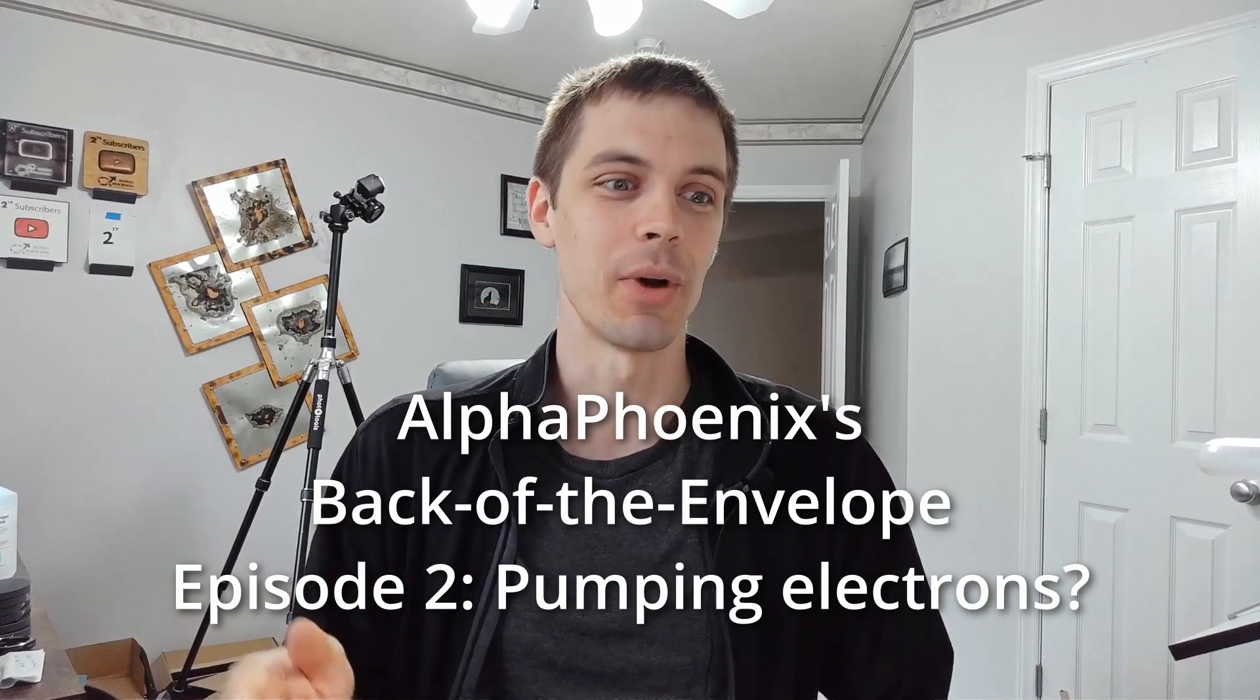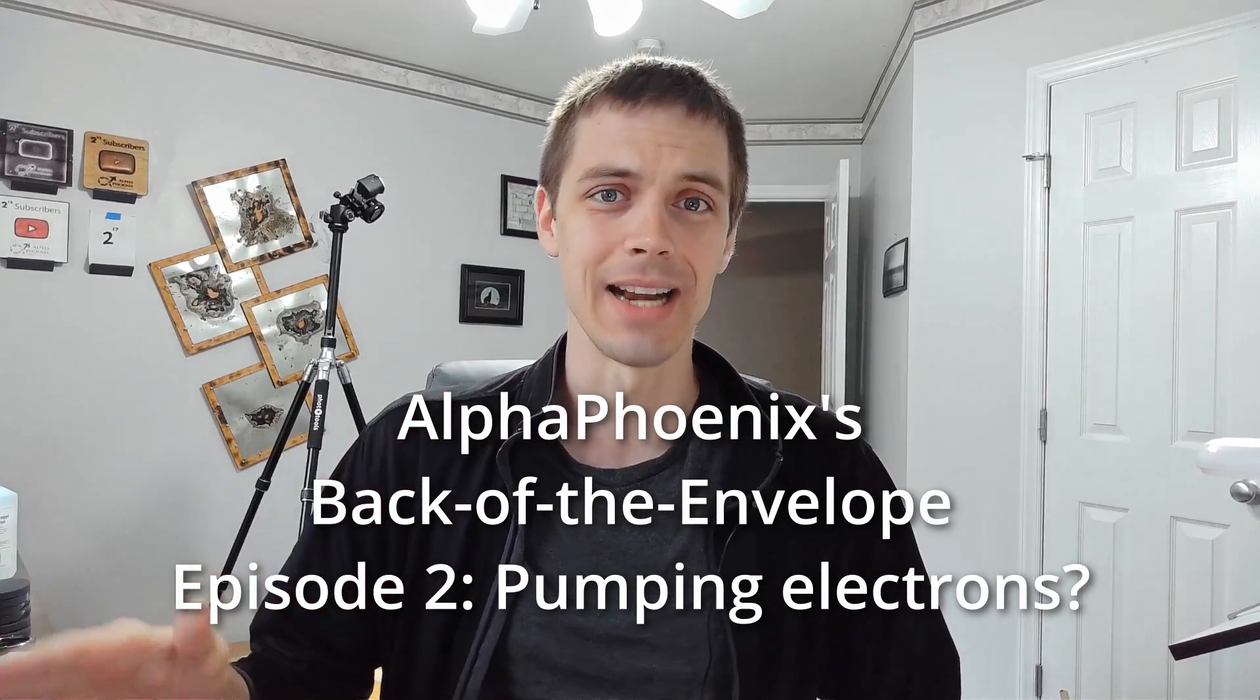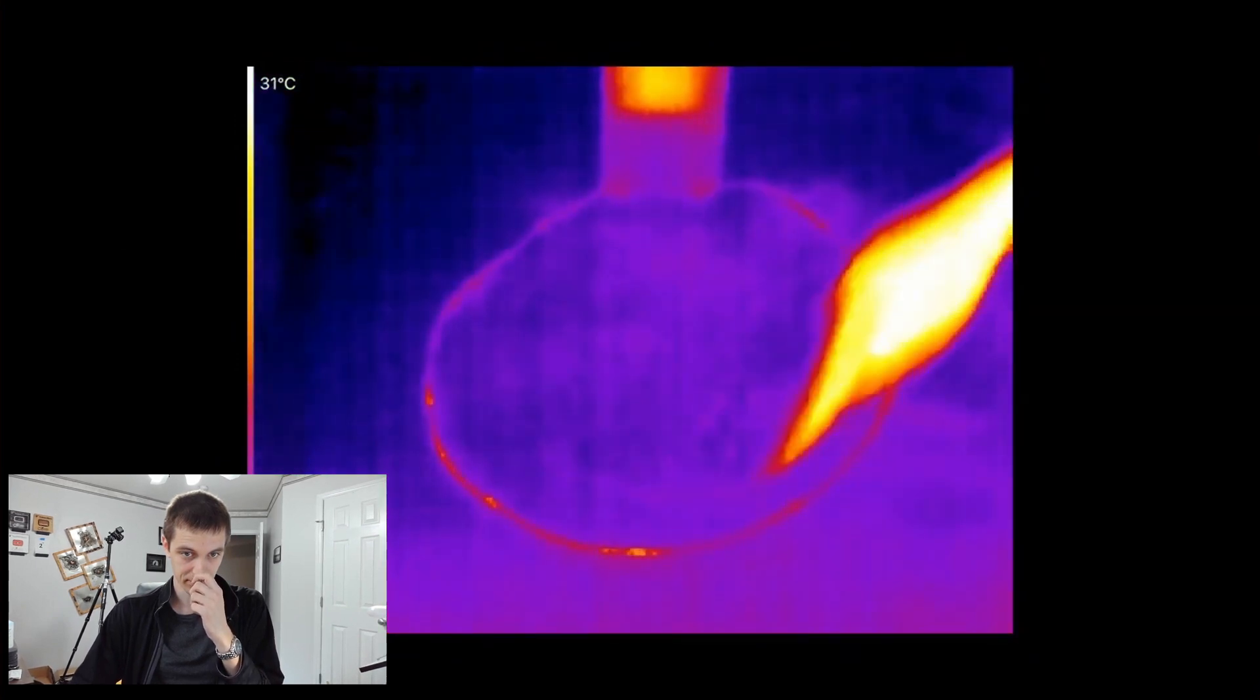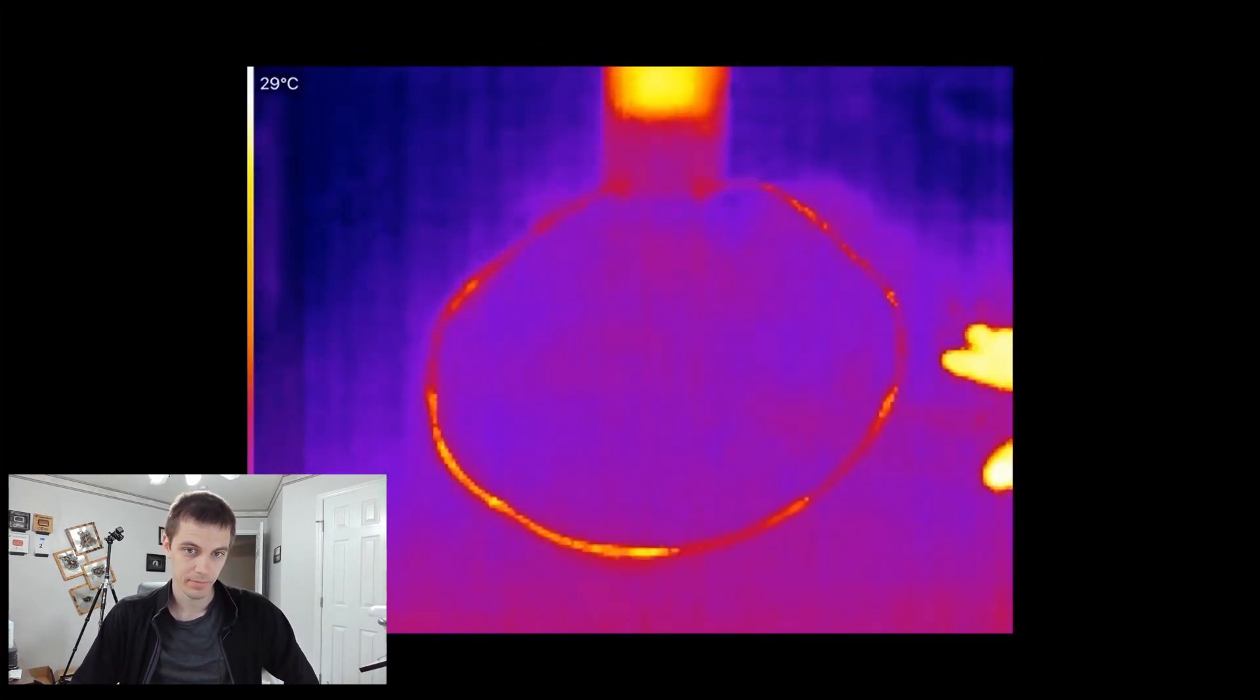Today, I want to talk about a throwaway line in one of my own videos. When talking about electrons flowing in a wire, I said the average electron is only scooting forward very slowly through this wire, about a millimeter every four seconds.